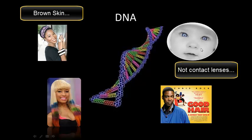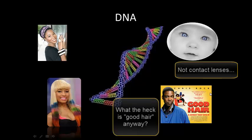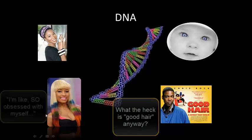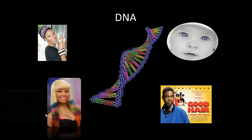DNA determines whether or not you have brown skin like India Arie, or blue eyes, or whether you have good hair or bad hair — or you can just be like Nicki Minaj and defy DNA and have whatever color hair or eyes you want. In a nutshell, everything comes down to chemistry.